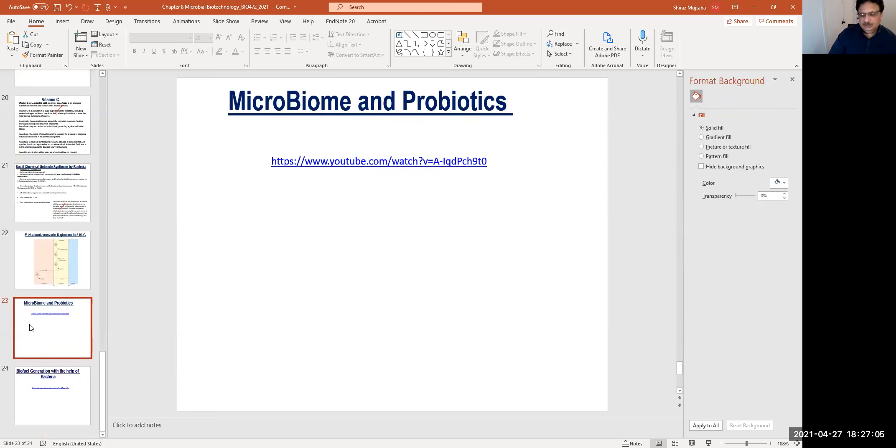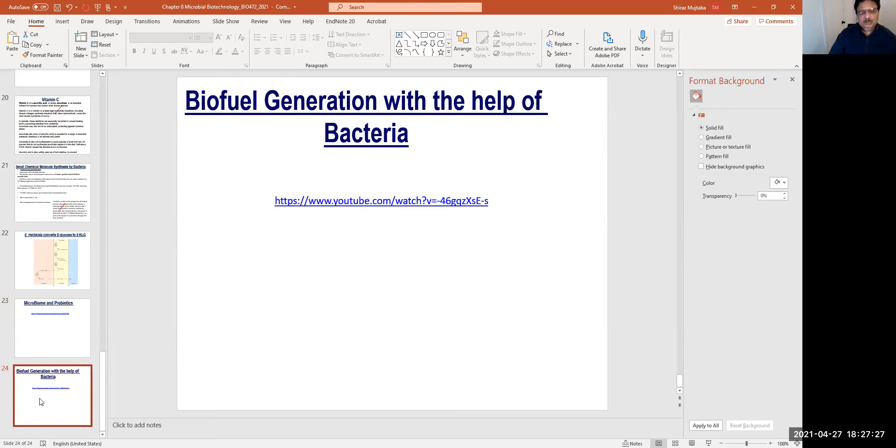So that is basically, this is a short chapter. And I would advise you that microbes are not only responsible for producing vaccines or antibiotics or vitamin C, but they play a very huge role in probiotics, microbiome, the gut bacteria. And it also helps in the generation of biofuels. So please watch these videos, YouTube videos. So with this, we finish this chapter on microbial biotechnology.